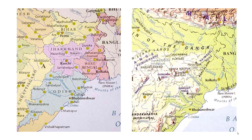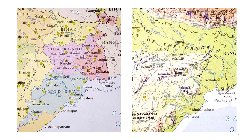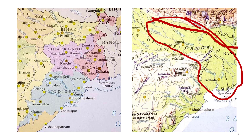Next we move on to Eastern India. The four states here are Bihar, Jharkhand, West Bengal, and Odisha. Eastern India is often an all-encompassing term that includes the Northeast as well. The natural features here, just like the Northern region, are the Himalayas and the Indo-Gangetic Plain.